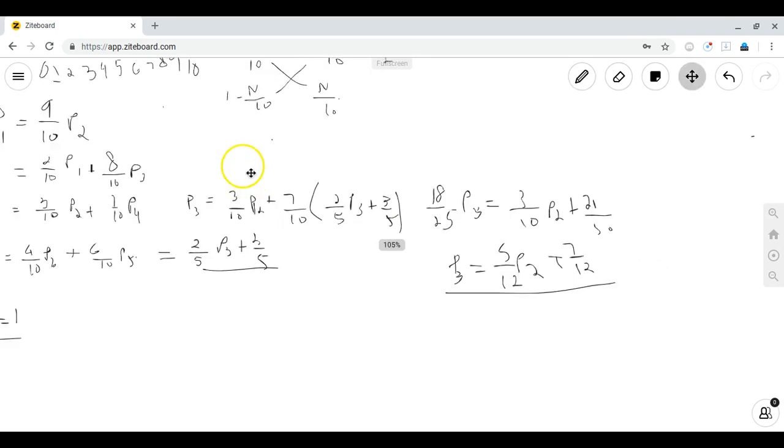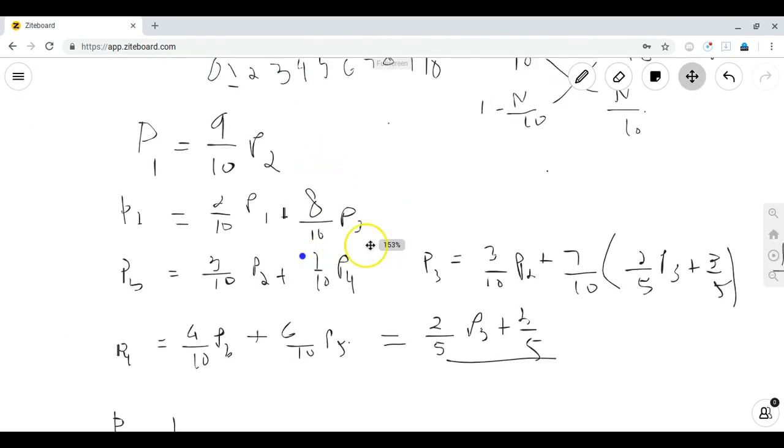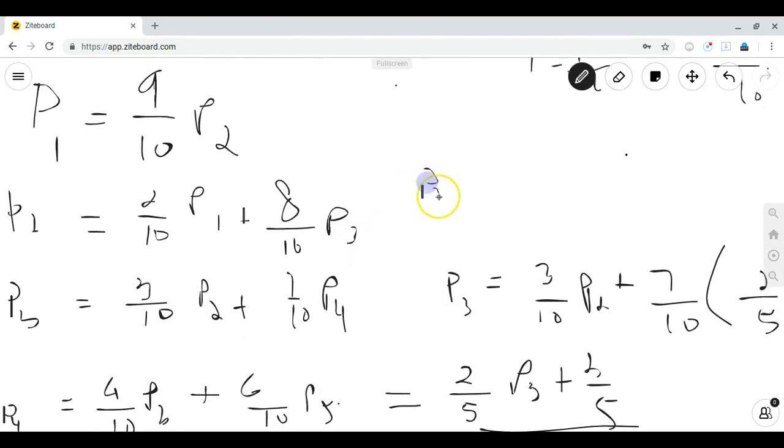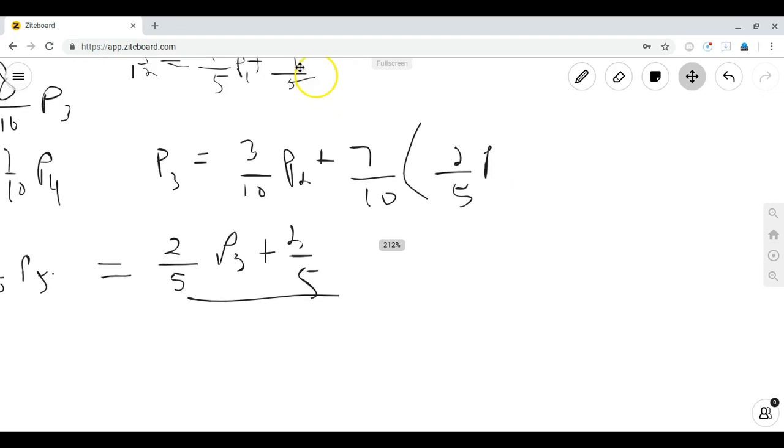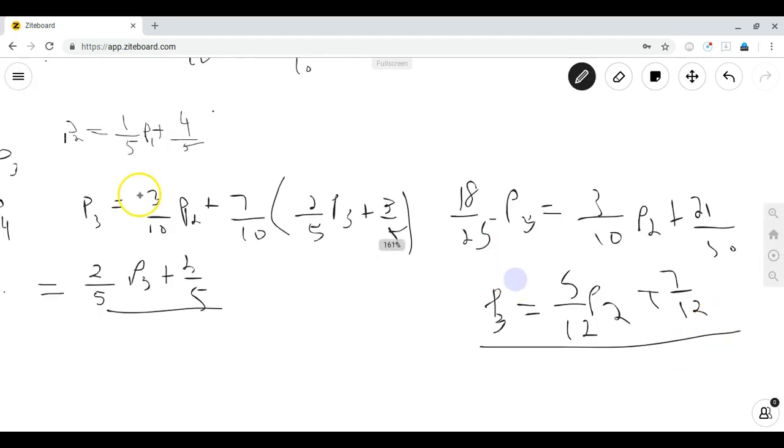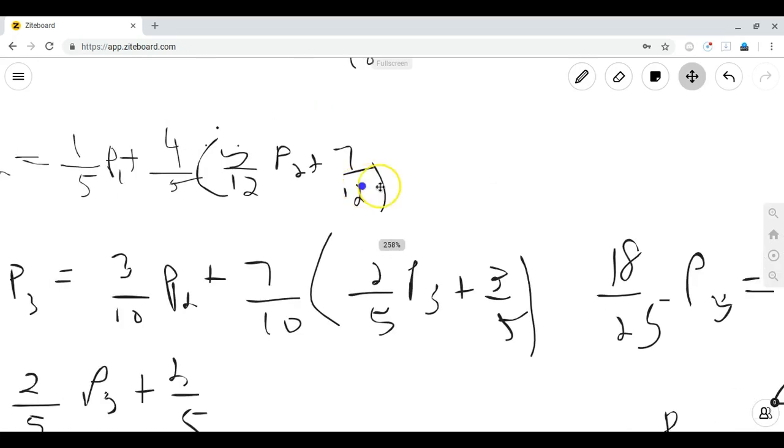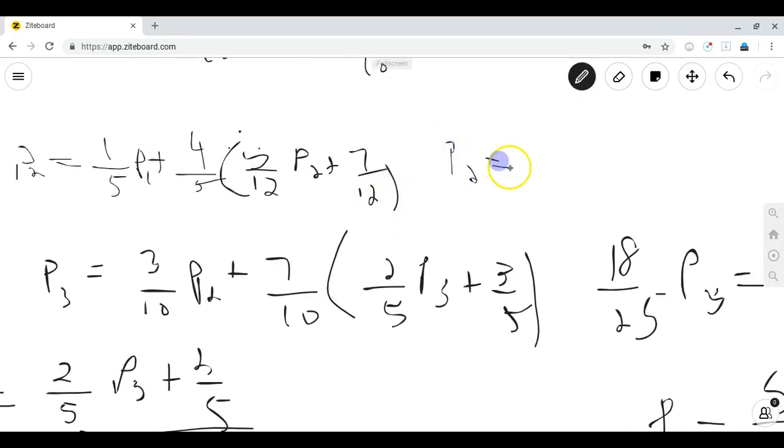Now we can plug in p of 3 in our equation for p of 2. P of 2 is equal to 2 tenths p of 1 which is just 1 fifth plus 4 fifths p of 3. We can use what we found earlier since p of 3 is equal to 5 over 12 p of 2 plus 7 over 12. Expanding this we see that p of 2 is equal to 1 fifth p1 plus 1 third p of 2 plus 7 over 15.